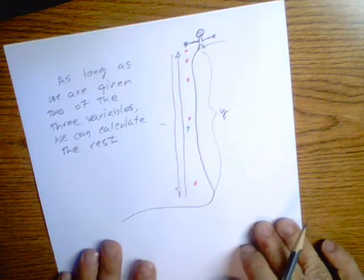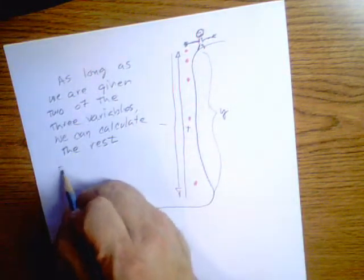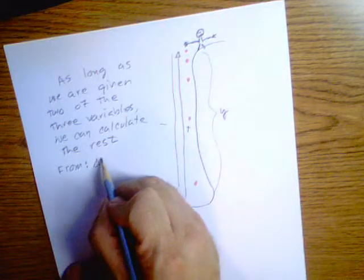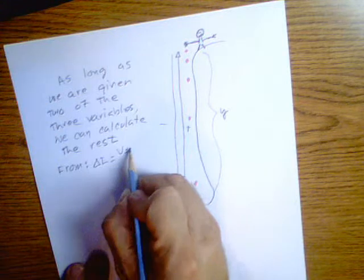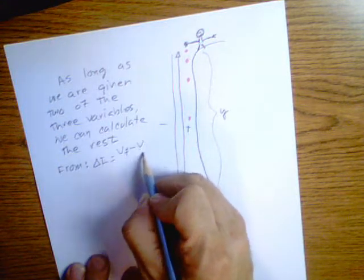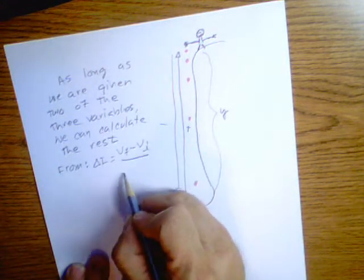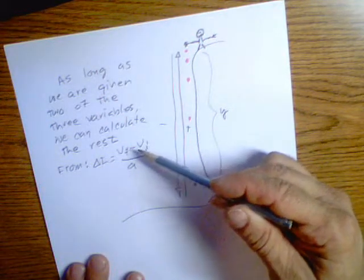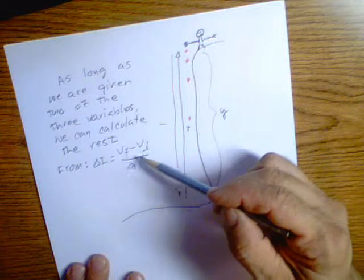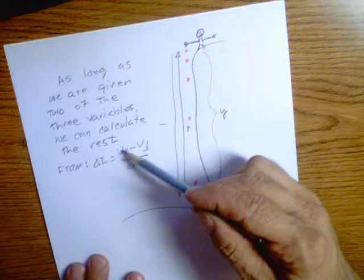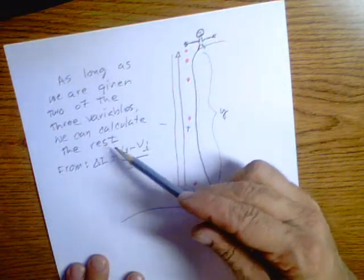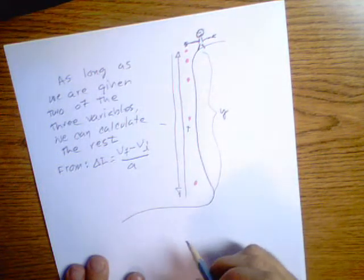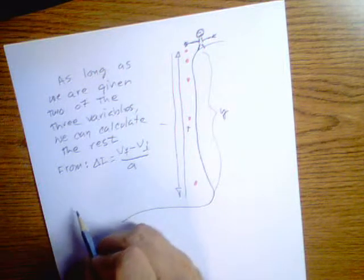As long as we are given two of the three variables, we can calculate the rest. What are those three variables? From the equation, change in T equals velocity final minus velocity initial over acceleration. Now we know acceleration. As long as we're given one of these two variables, either velocity or time, we could certainly calculate the missing variable.